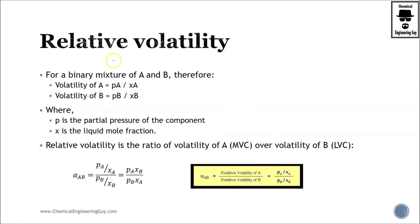For a binary mixture we have A and B, so let's do the same for both: pA divided by xA and pB divided by xB, where p is the partial pressure and x is the liquid mole fraction. Now it's time to define relative volatility. The definition is: we need the volatility of A, the volatility of B, divide them and you will have the ratio of volatilities.